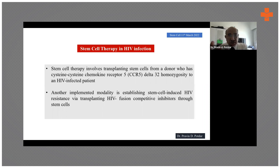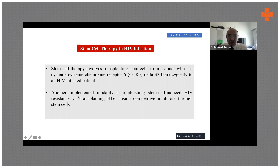Stem cell therapy in HIV infection involves transplanting stem cells from a donor who has the CCR5-Delta-32 homozygous mutation — cysteine-cysteine chemokine receptor 5, or CCR5 — into an HIV-infected patient. The role of CCR5 in HIV entry will be explained further. Another modality is establishing stem cell-induced HIV resistance by transplanting HIV fusion competitive inhibitors through the stem cell, which can also stop HIV cells from entering.